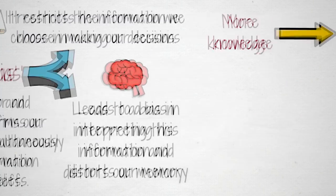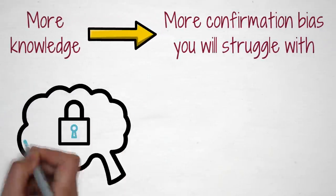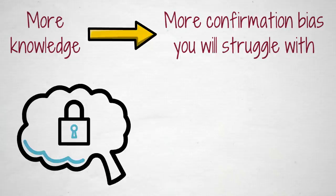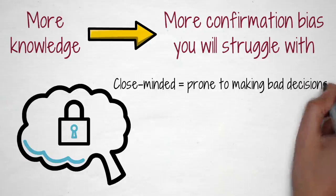The more knowledge you have, the more confirmation bias you will struggle with and the more likely you'll reject ideas that differ from your own. Once we become close-minded, we are prone to making bad decisions, even more so than a person with much less knowledge than us.